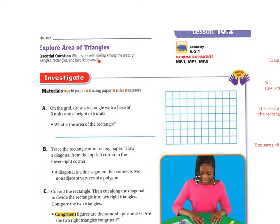Our central question: what is the relationship among the areas of triangles, rectangles, and parallelograms? So the materials are grid paper, tracing paper, ruler, and scissors.